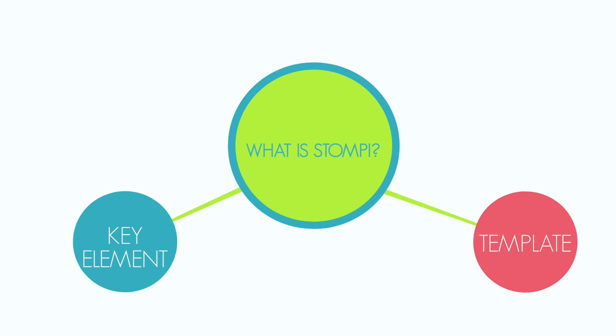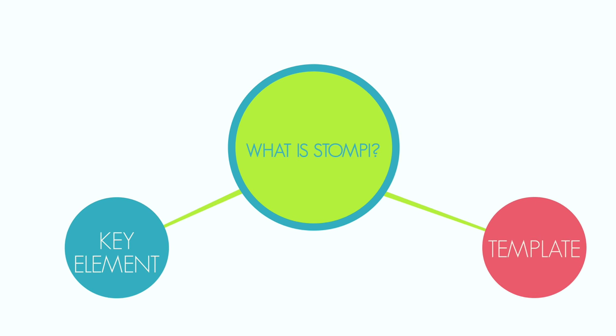Stompy is a key element to understanding and improving your Afrikaans. Stompy is a template for word order in Afrikaans, and if you follow its rules, you will never have trouble writing a speech ever again. So let's dive in!